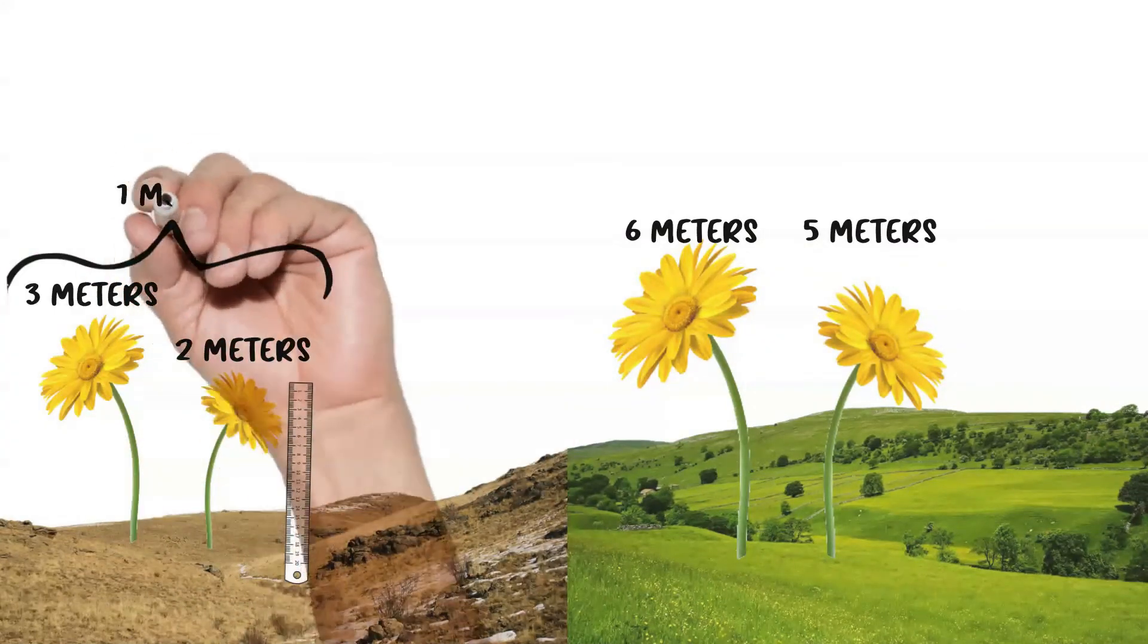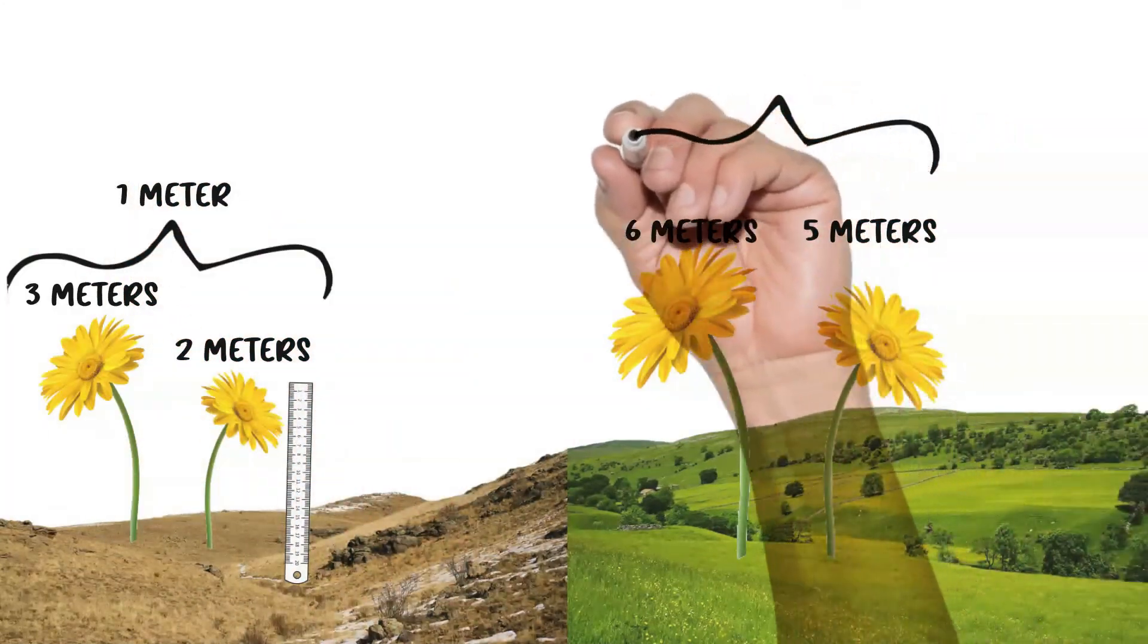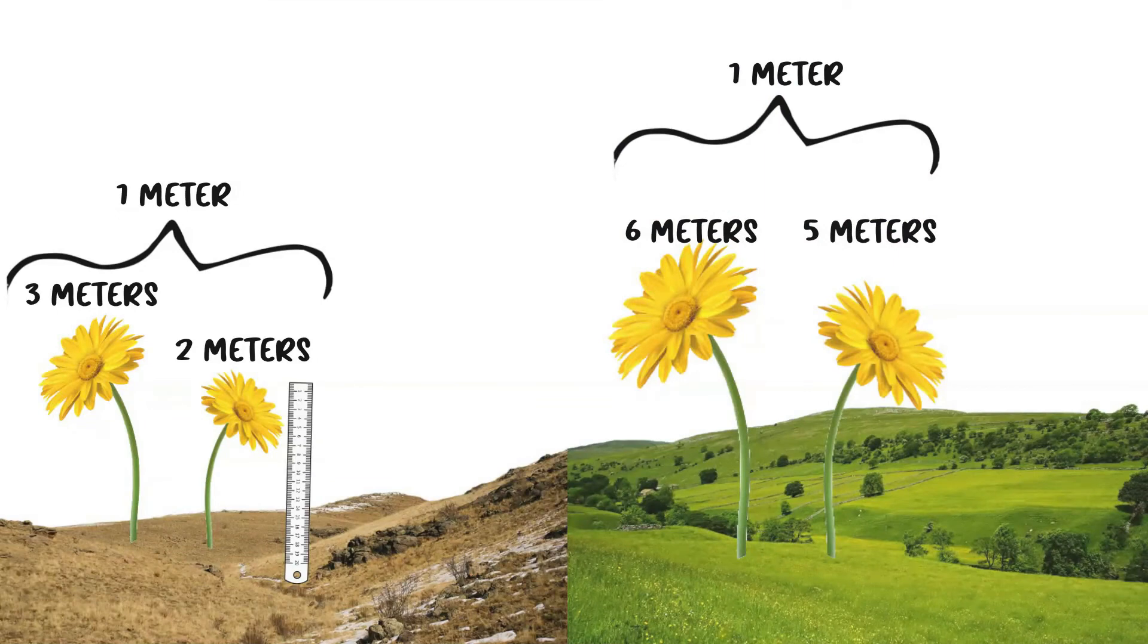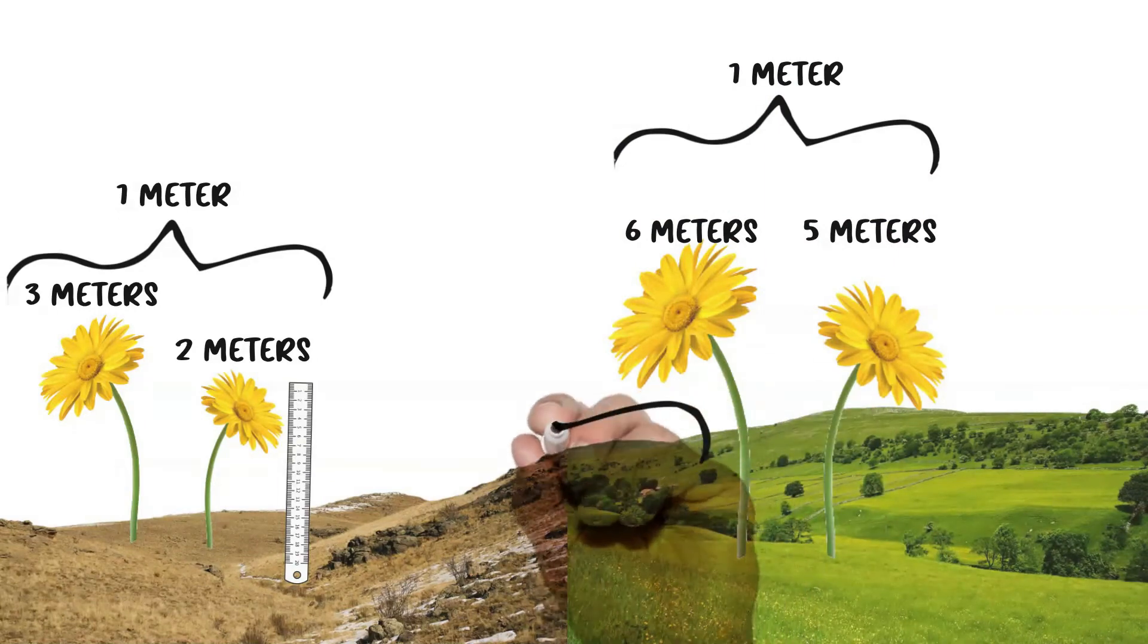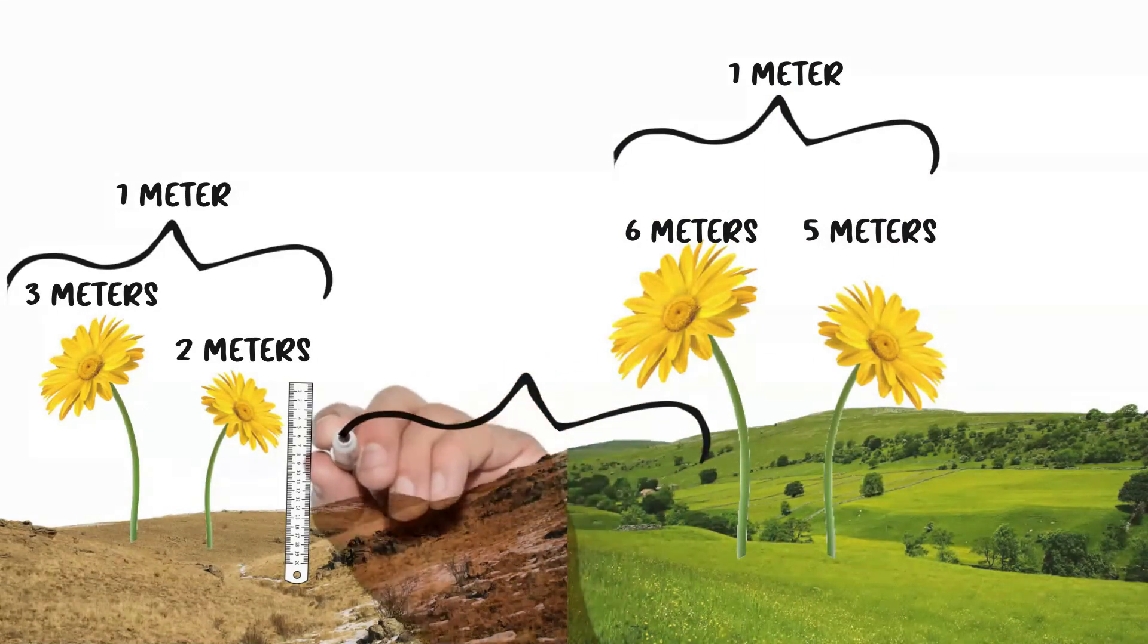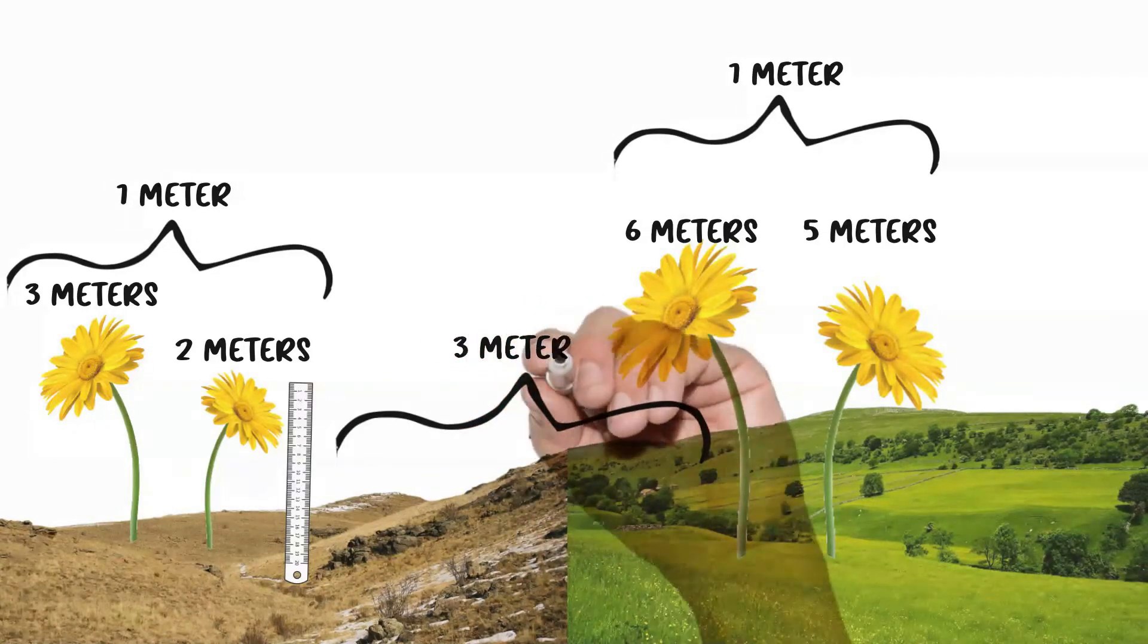So the difference between the flowers in the same environment is three minus two, so one meter. And then six minus five, which is one meter. And then when we look at the differences across the environments, we see three and two meters, that's two and a half meters. And six and five meters, that's five and a half meters. So we subtract those out and we get the difference to be three meters.